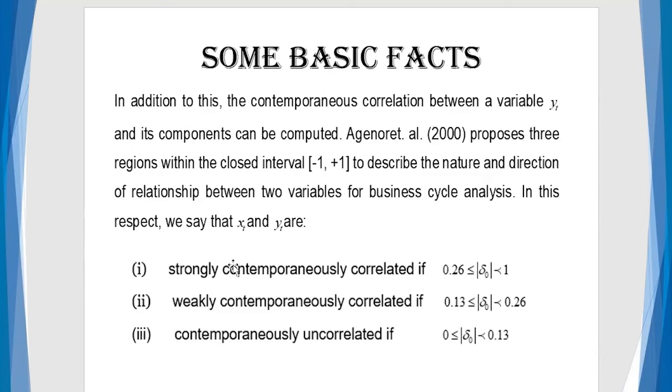Now, again, standing on the... Using the interval minus one plus one to describe the nature of the direction of the relationship for business cycle analysis. In this respect, we say that just within that interval minus one and one, if the correlation coefficient at zero lag lies between 0.26 and one, we say the variables are strongly contemporaneously correlated. So, these are some of the terms that we use.